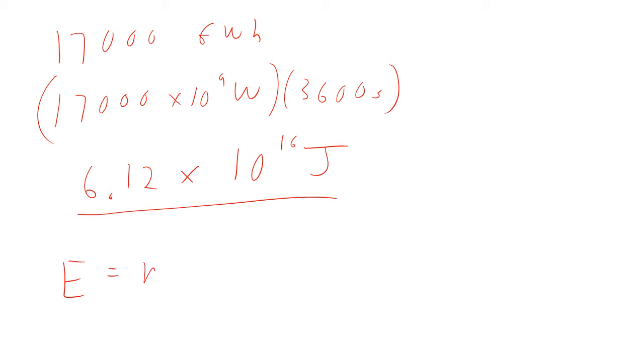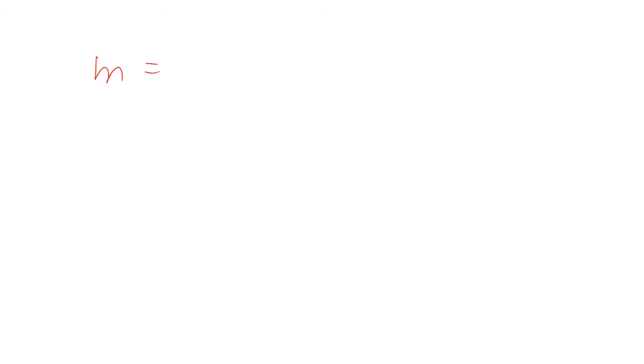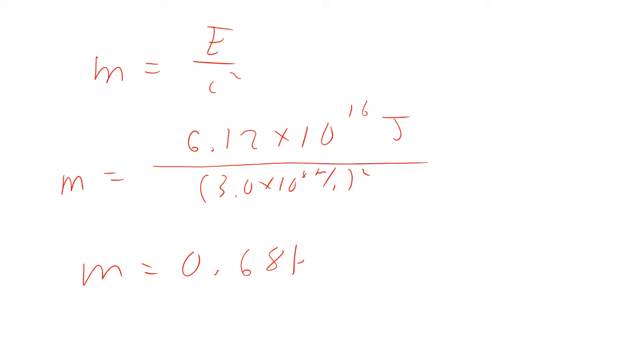E equals MC squared. So that means that M equals E over C squared. So M is E divided by, E in this case, which is going to be the 6.12 times 10 to the 16th joules. And we divide that by C squared, 3 times 10 to the 8th meters per second squared. So this comes out to be 0.68 kilograms.